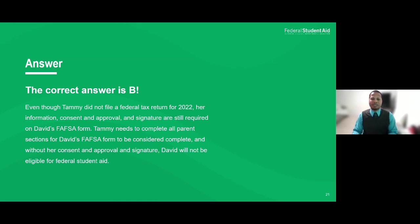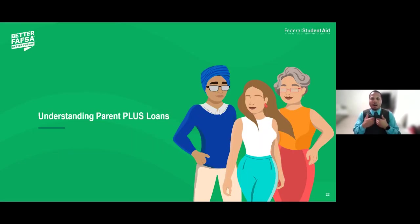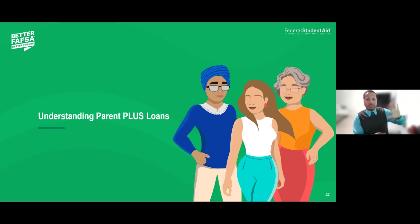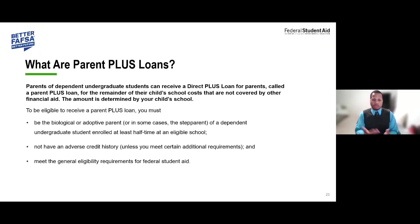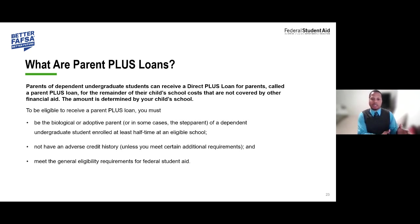Now we're moving into the next section about understanding Parent PLUS loans. In the first part of this session we discussed subsidized and unsubsidized loans, which are in the student's name. The Parent PLUS loan is a loan that parents can take out on behalf of the student. To be eligible, you must be a biological or legally adoptive parent — as defined by Congress under the Higher Education Act of 1965.